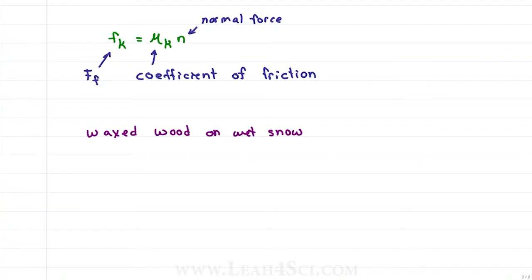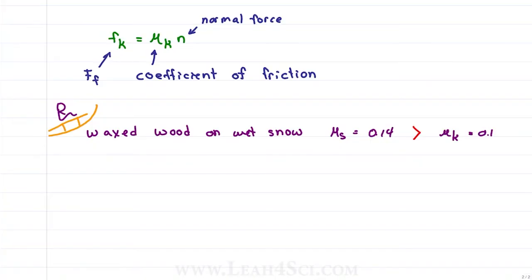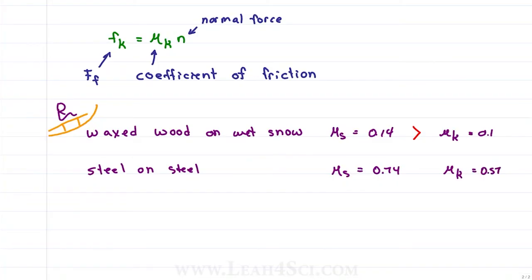Let's look at some coefficients. For waxed wood on wet snow, mu sub s equals 0.14 and mu sub k equals 0.1 — notice static is greater than kinetic. It's much more difficult to get an immobile object moving than to slow one already with momentum. We expect something to slide easily on snow, hence very low coefficients. For steel on steel, mu sub s equals 0.74 and mu sub k equals 0.57. Note there are no units for these coefficients because it's a ratio of how much it wants to move versus how much it doesn't.